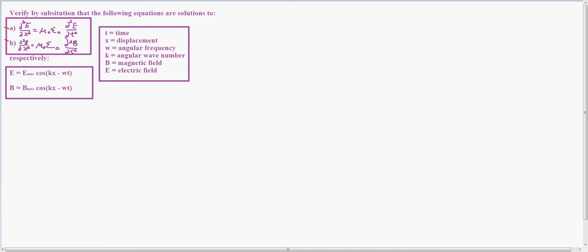Respectively E equals E max cosine kx minus wt, and B equals B max cosine kx minus wt. Basically what it's saying is to solve by substitution, prove that these equations are correct.